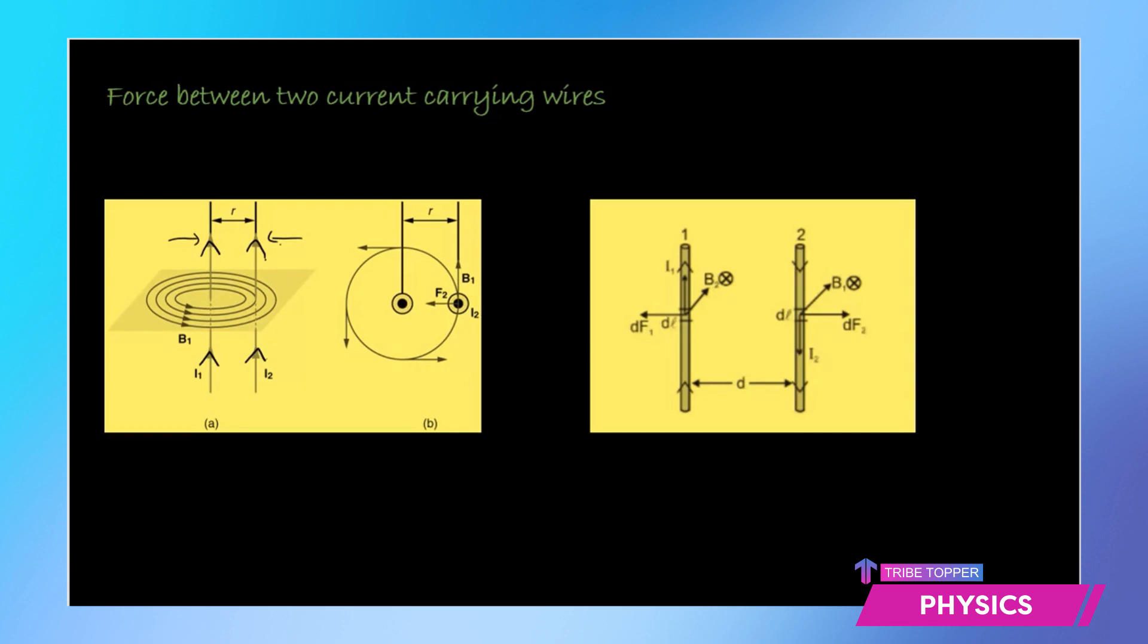The magnetic field pattern is such that these two wires will attract each other. And when you have two conductors placed parallel to each other,